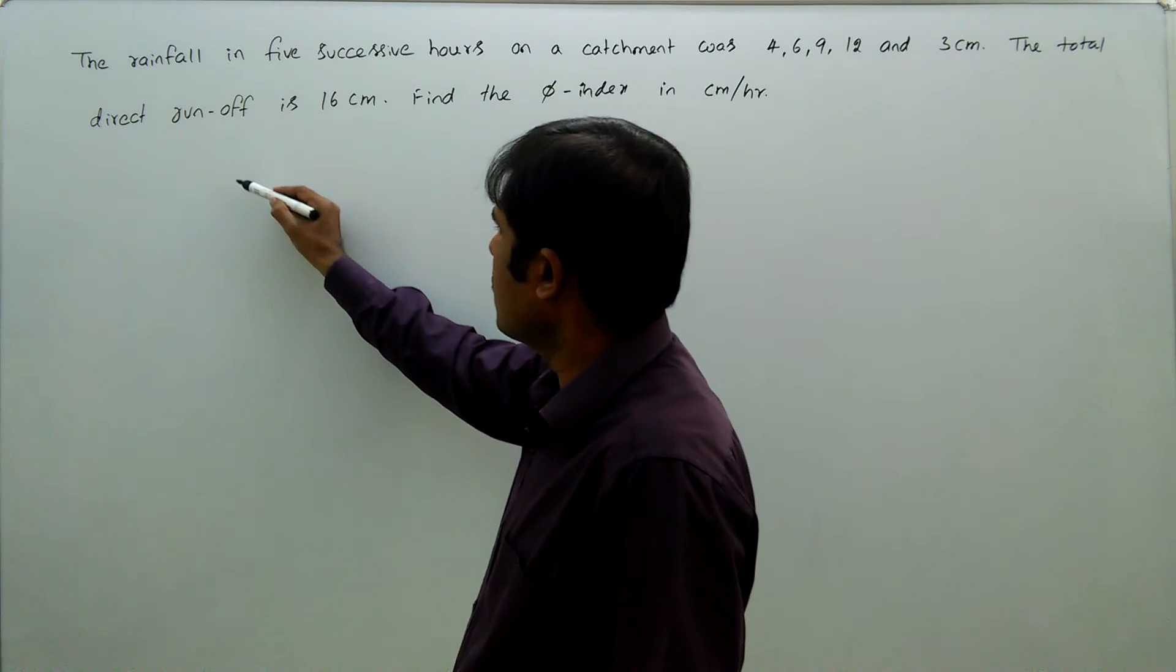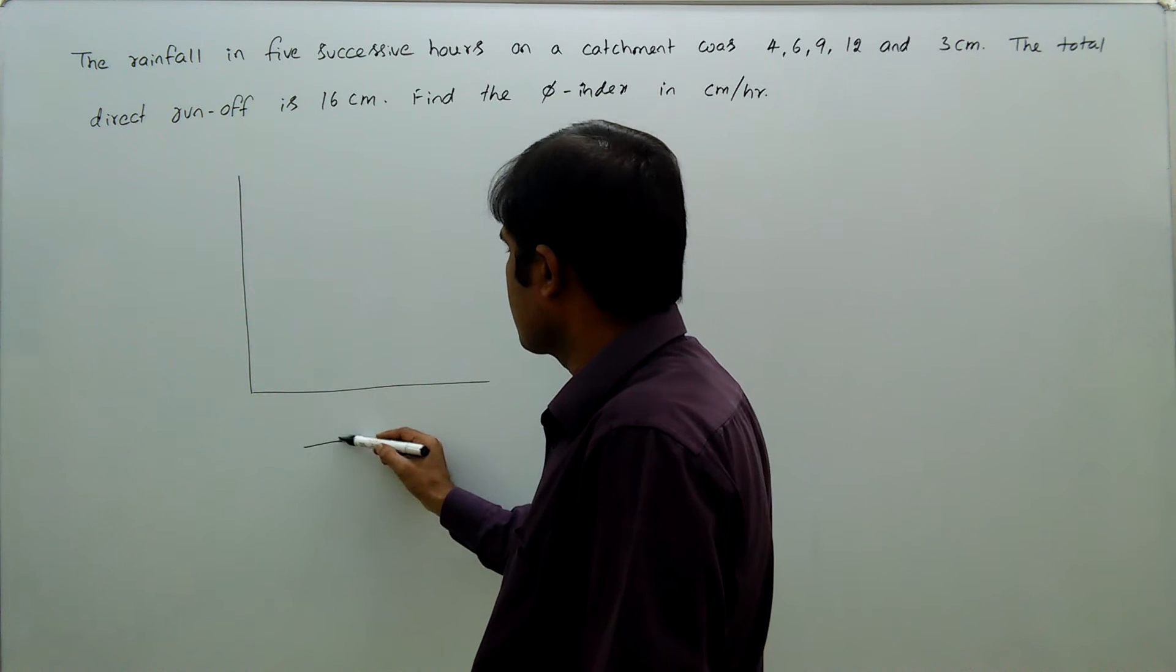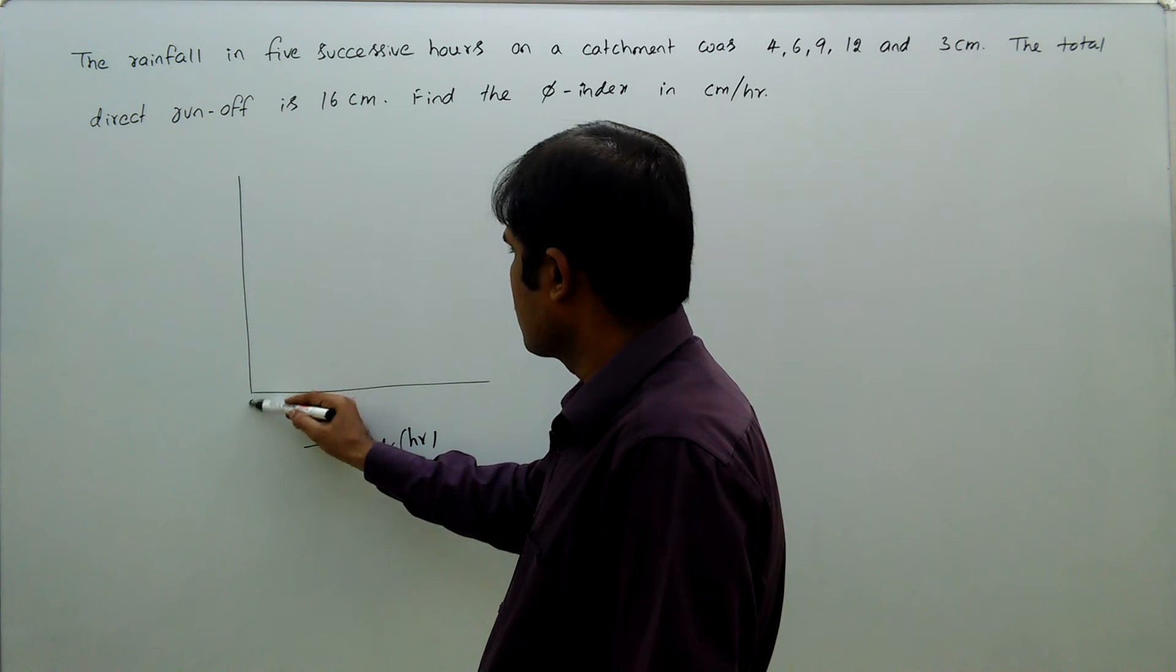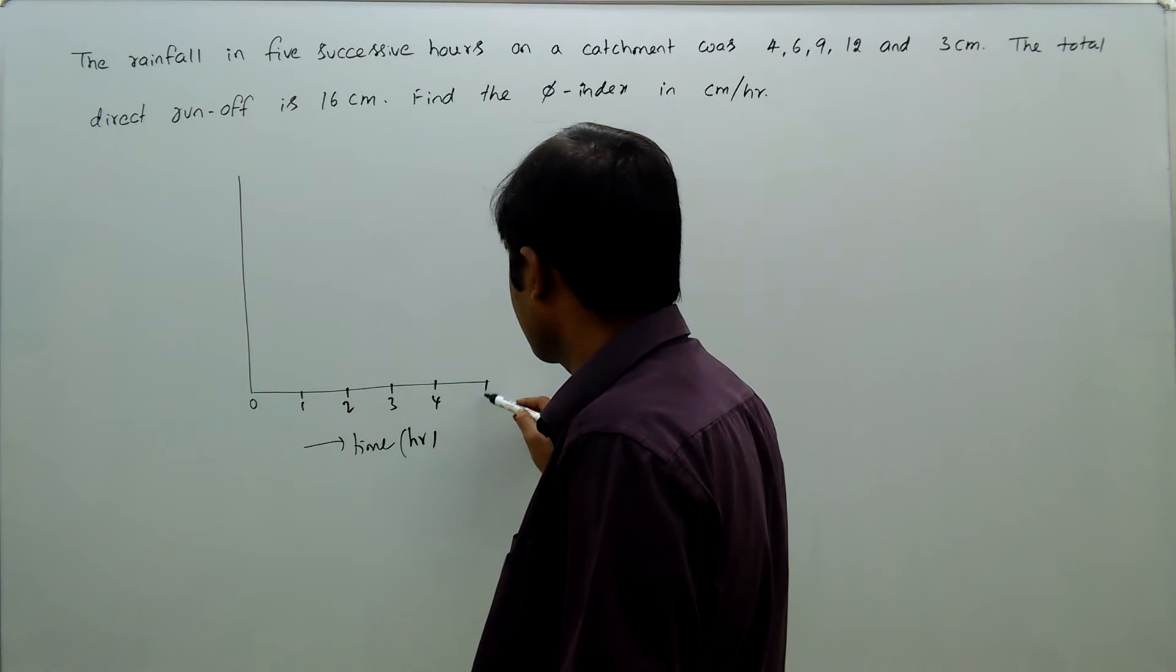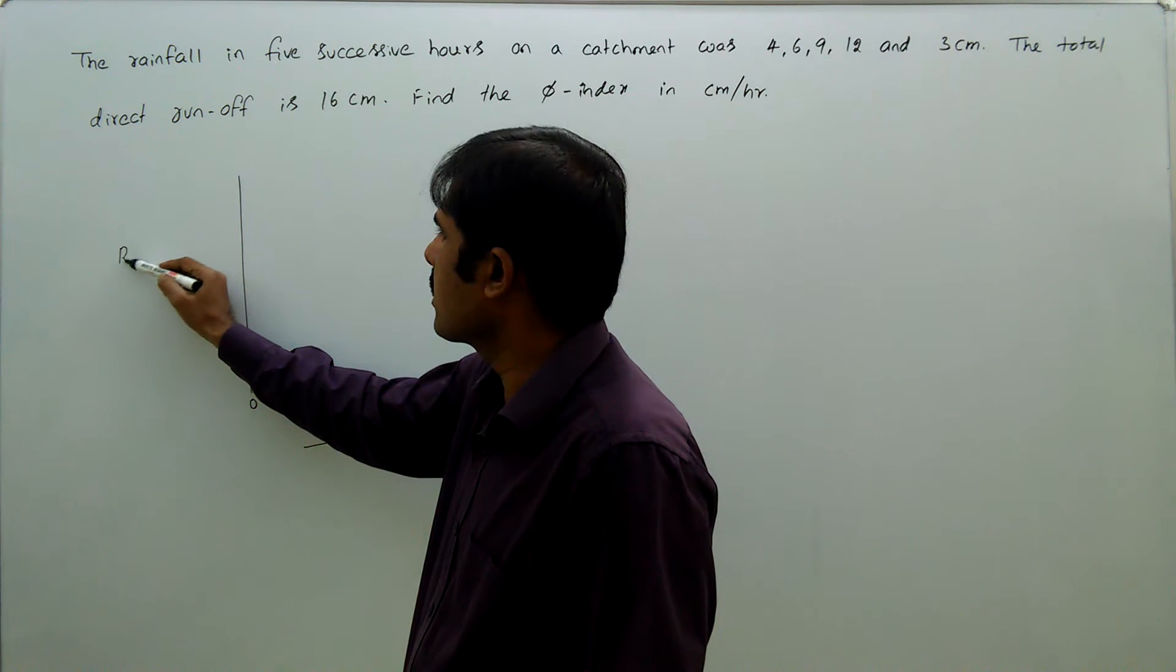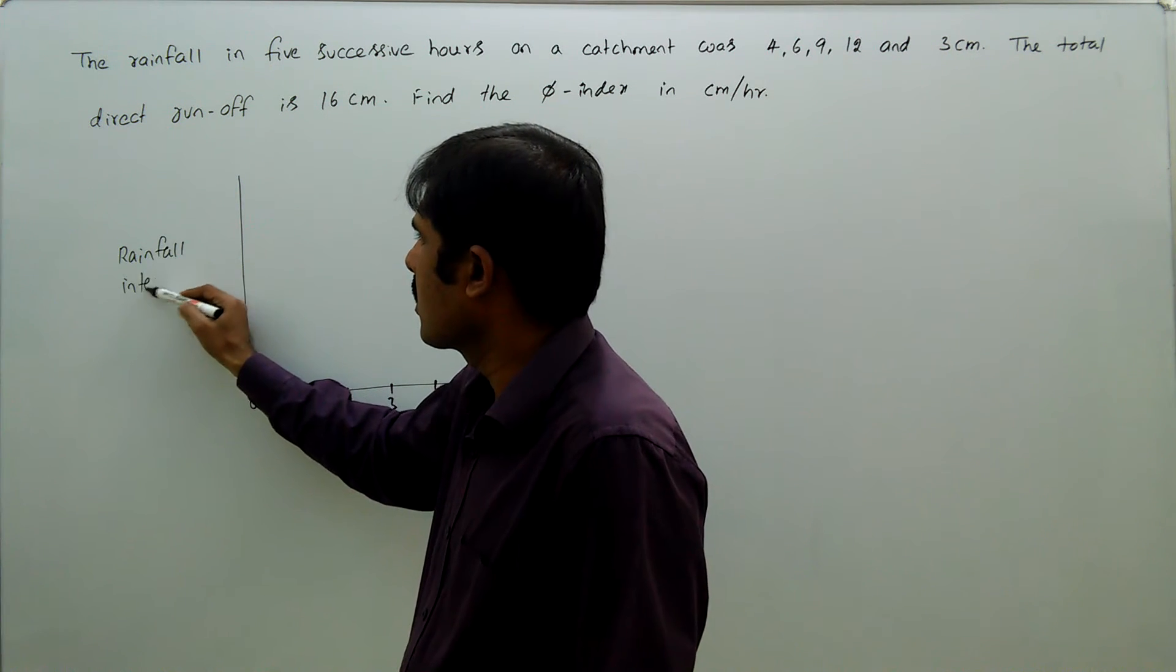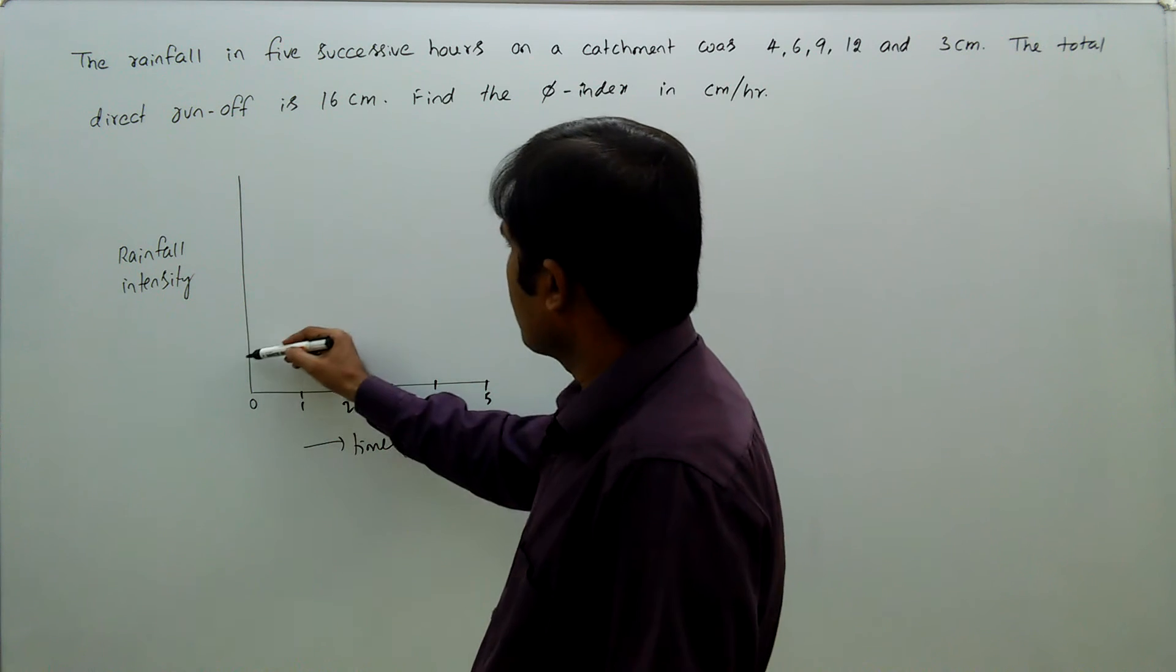Now, first we will draw an autograph. This is time in hours: 0, 1, 2, 3, 4, 5. Here, rainfall intensity.